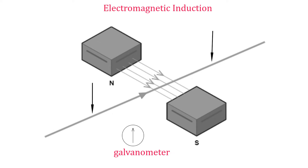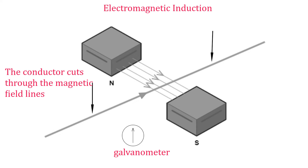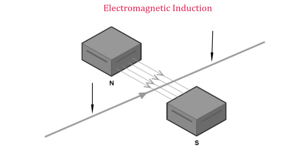The current that is produced is detected by a galvanometer — an instrument that measures small electrical currents by the deflection of a moving pointer. The pointer moves to the left or right depending on current direction. What causes the EMF to be produced? As the conductor moves through a field, it cuts through the magnetic field lines, and the cutting of the field lines is what causes the EMF to be produced.